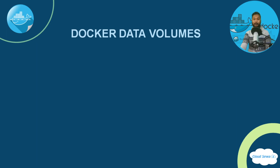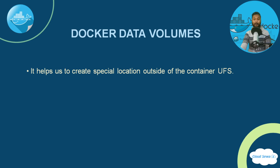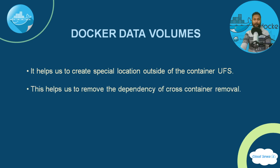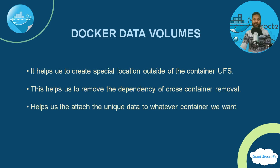What Docker data volumes basically do is help us create a special location outside of the container's UFS — a special file location where you can store your unique data that doesn't depend on the container's UFS or its life. With data volumes, we can remove the dependency on container removal, and we can attach the unique data to whatever container we want. You can use data from a container that was created and destroyed, and reuse that unique data hours later.